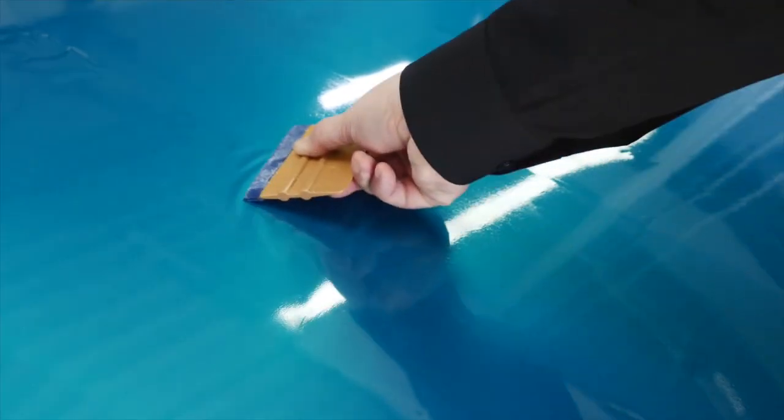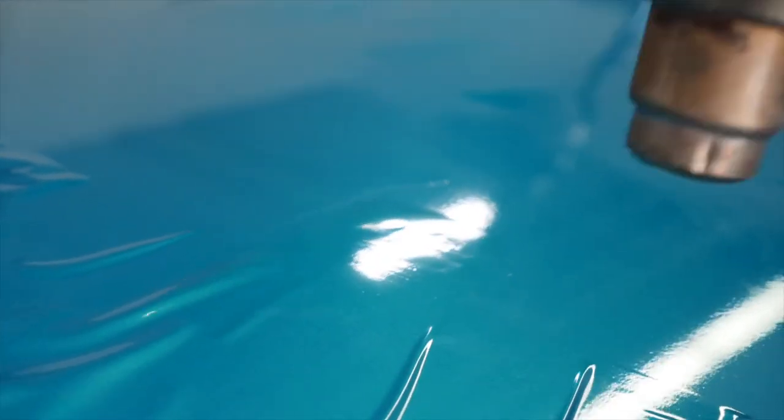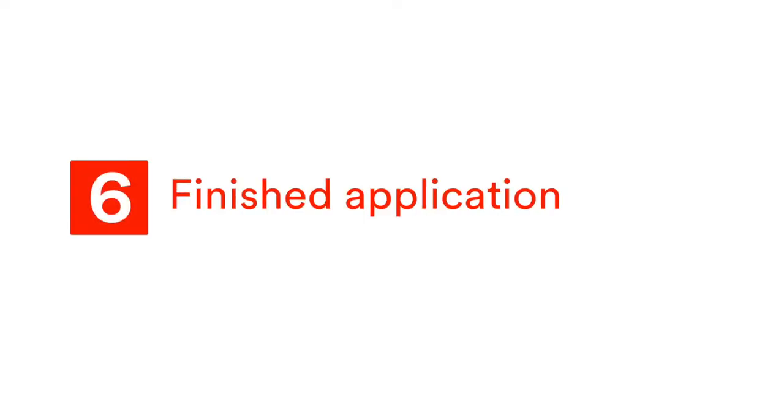If wrinkles occur during squeegeeing, don't lift the film. Instead apply heat, let it cool down and continue squeegeeing. The applied film on the bonnet is now ready for edge cutting.